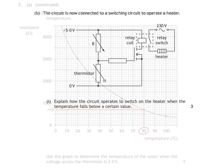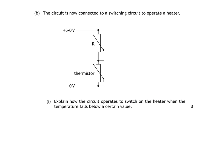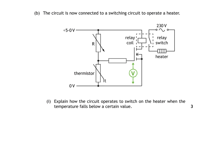This is B part 1. The circuit is now connected to a switching circuit to operate a heater, and we're asked to explain how the circuit operates to switch on the heater when the temperature falls below a certain value. This is the MOSFET — it acts like a voltage-operated switch in these circuits — and this is our voltage divider from before. The voltage across the bottom component, the thermistor in this case, is very important because it's also the voltage between the gate and the source of the MOSFET.